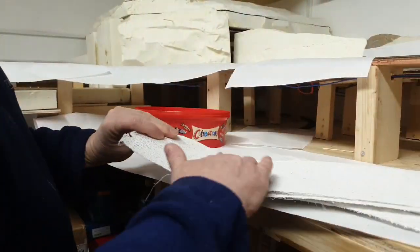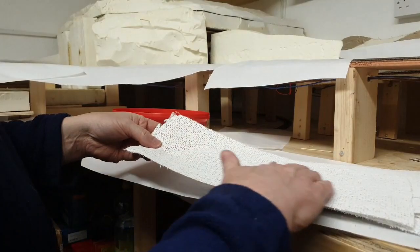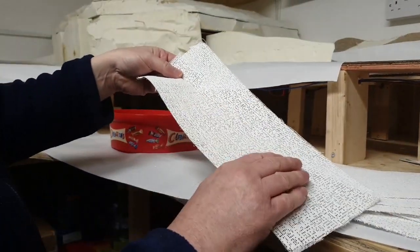You'll notice with the plaster cloth one side is smoother than the other and the other is a bit rougher, so when you're laying it down you want the rougher side facing up.